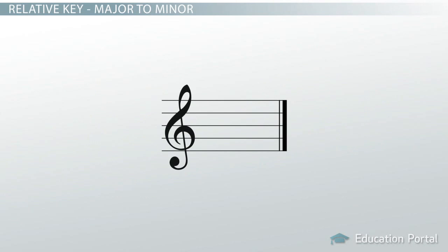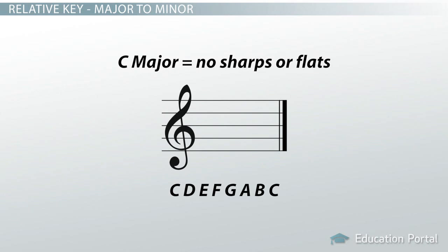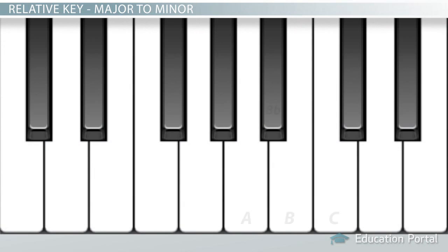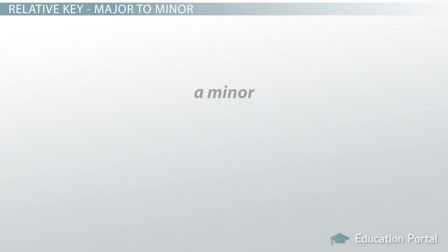All you need to do to find the relative minor from a major key signature is to count backwards three half steps. For example, C major has no sharps or flats. It's just C, D, E, F, G, A, B, C. When working backwards through the musical alphabet three half steps, so from C to B, from B to B flat, and from B flat to A, we find that the relative minor of C major is A minor.